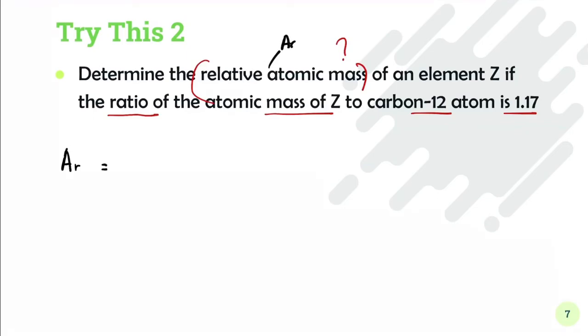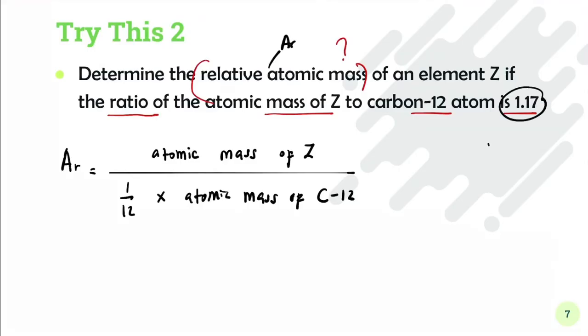Ar equals atomic mass of element Z divided by 1/12 times the atomic mass of carbon-12. The ratio they gave is 1.17, which means 1.17 to 1 - that is the ratio of atomic mass of Z to the atomic mass of carbon.